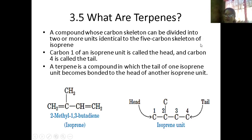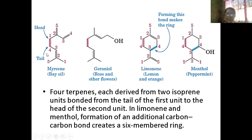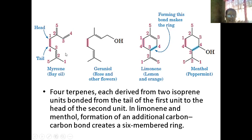It is a five-carbon skeleton. A terpene is a compound in which the tail of one isoprene unit becomes bonded to the head of the next isoprene unit. This is the head and this is the tail. These are examples of an isoprene unit. The isoprene unit has five carbons but four are continuous — the fifth is a substituent.